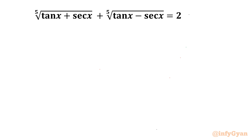Welcome back to InfiGaun friends. In this video we are going to take up one very interesting and challenging trigonometric radical equation. The given equation is: the 5th root of (10x + sec x) plus the 5th root of (10x − sec x) equals 2. We have to find out the principal and general solutions. Let's get started using the substitution method.